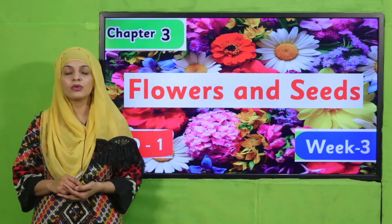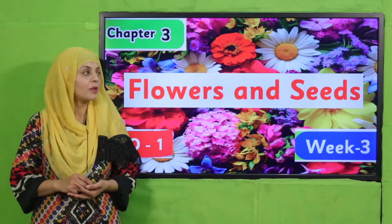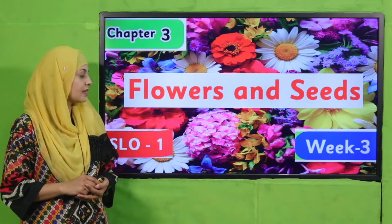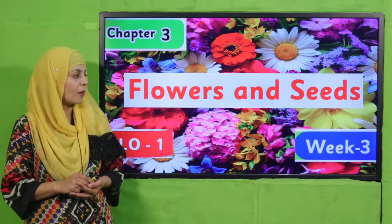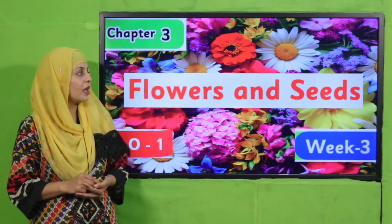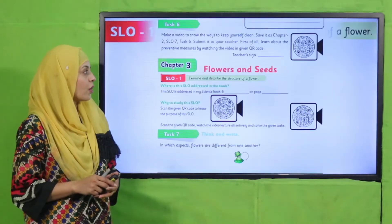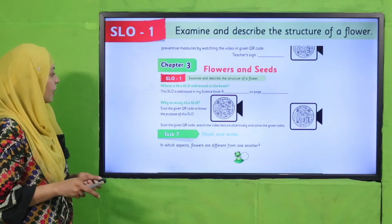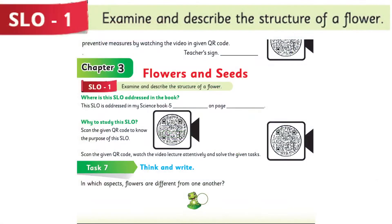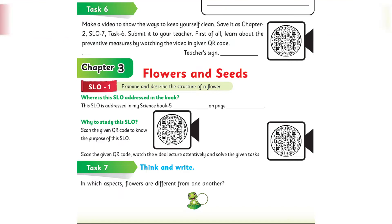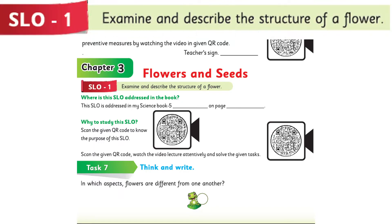My dear students, today we are going to start Chapter Number 3: Flowers and Seeds. We are on SLO Number 1, Week Number 3. According to this first SLO, students will be able to examine and describe the structure of a flower.